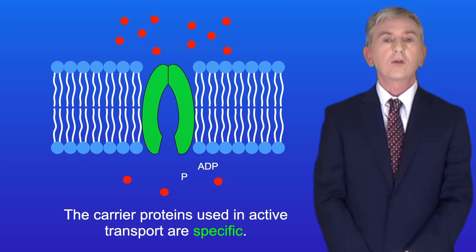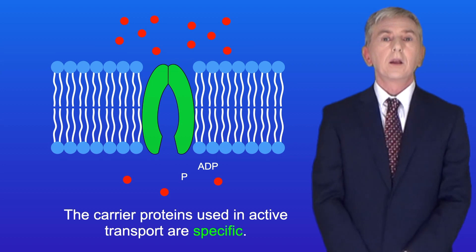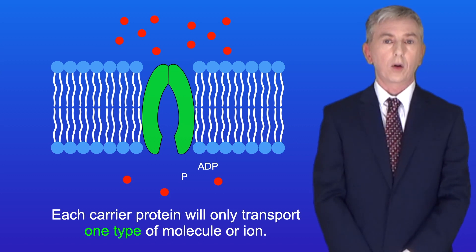Secondly, the carrier proteins used in active transport are specific, so each carrier protein will only transport one type of molecule or ion.